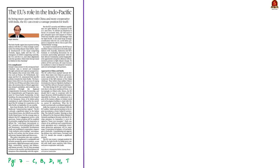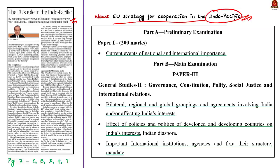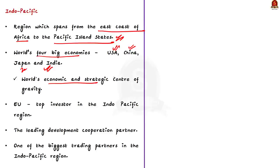The next article is an OPED piece. Recently, in the month of September, the European Union unveiled the EU Strategy for Cooperation in the Indo-Pacific, and this OPED article is written in the backdrop of this strategy. The Indo-Pacific region refers to a region spanning from the east coast of Africa to the Pacific island states. It includes the world's four big economies — USA, China, Japan, and India — and represents the world's economic and strategic center of gravity.